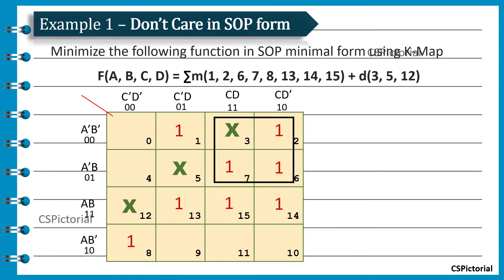This group points to A bar B bar, A bar B, CD, and CD bar. Here, B and B bar get cancelled, and D and D bar get cancelled, leaving the term A bar C in the final simplified expression. Similarly, we get the second quad only after involving the don't care cells. This group gives A bar D.